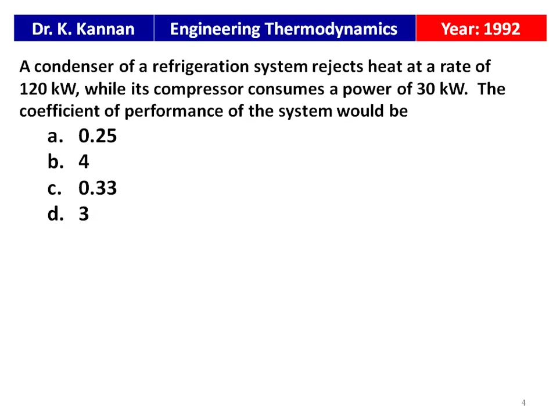The first question is from the 1992 question paper: a condenser of a refrigeration system rejects heat at a rate of 120 kilowatts, while its compressor consumes a power of 30 kilowatts. The coefficient of performance of the system would be — options: 0.25, 4, 0.33, and 3.